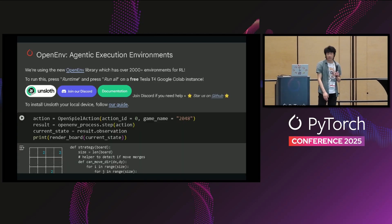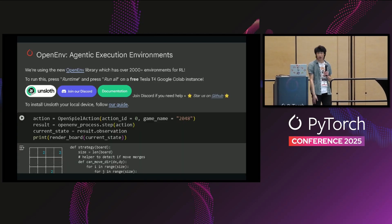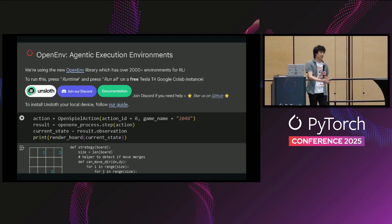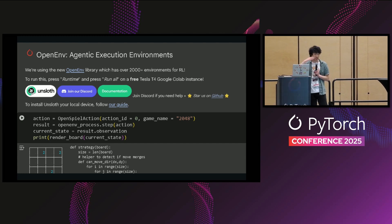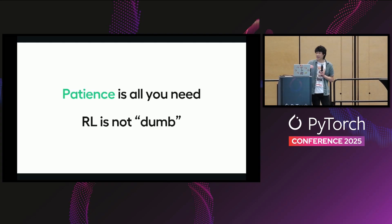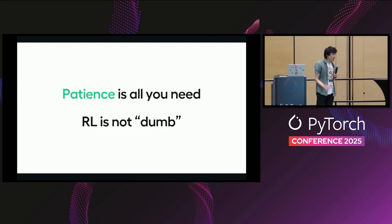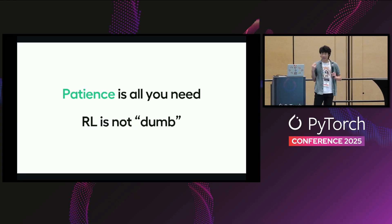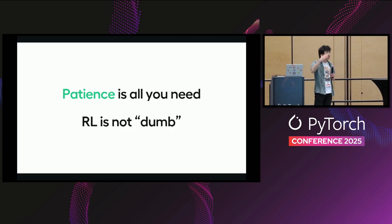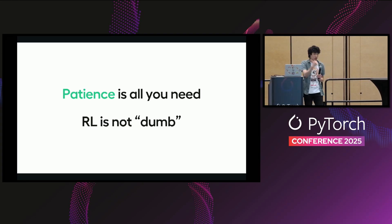We recently collaborated with open-env from PyTorch, which has 2,000 environments. We released a new notebook today to play the 2048 game. Finally: luck is not all you need for RL — it's more like patience is all you need, plus some special algorithm tricks. RL is not dumb — it learns to decrease the probability of bad answers and increase the probability of good answers.